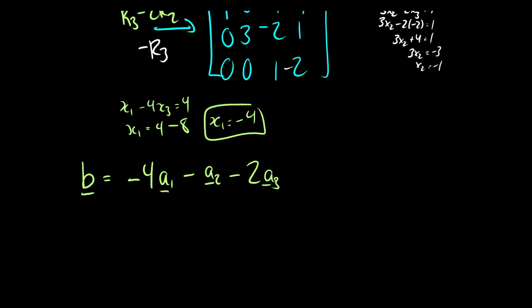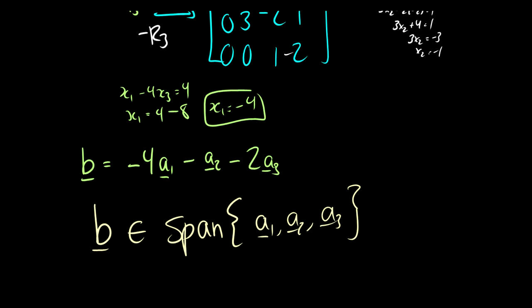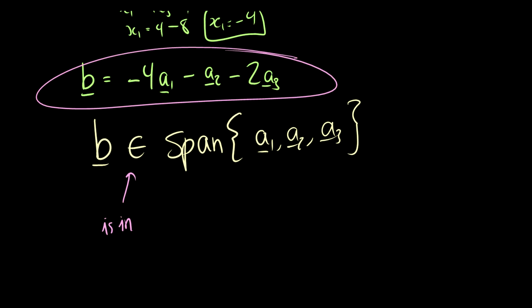We write this as: b equals negative four times a1, minus a2, minus two times a3. This is how we get b from a1, a2, and a3, so b is in the span. We say b is an element of the span of a1, a2, a3. That element symbol just means 'is in the set' or 'is an element of the span.'